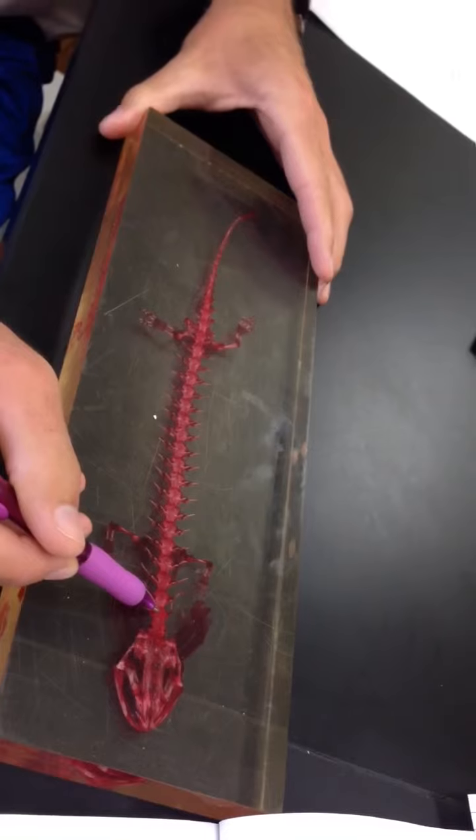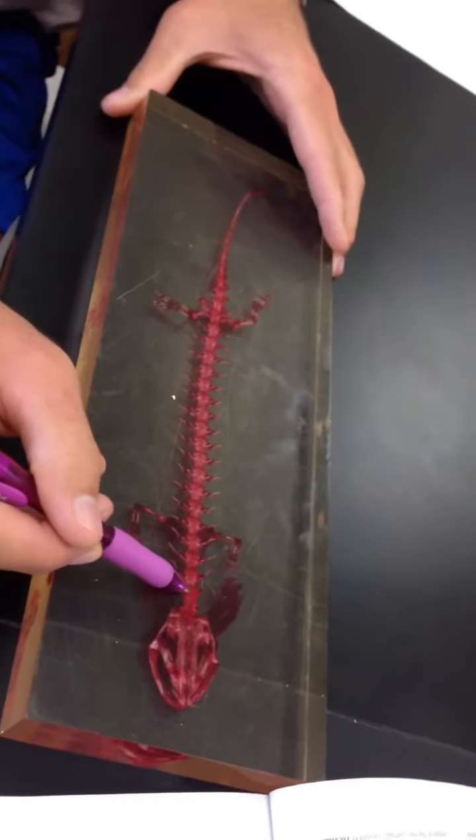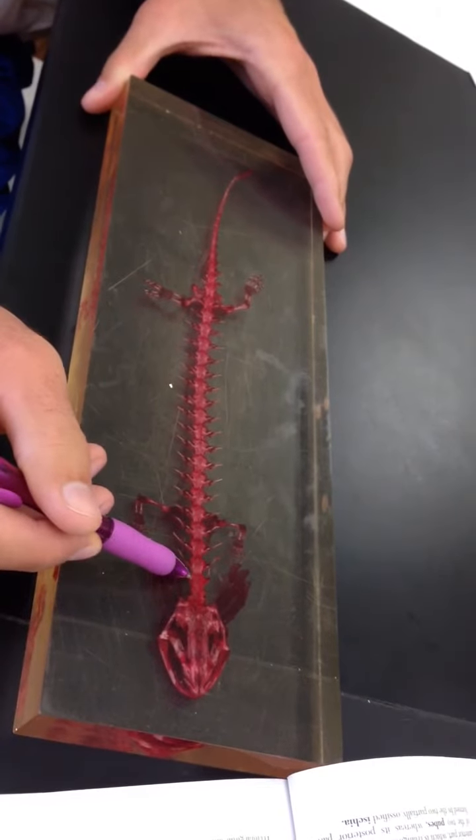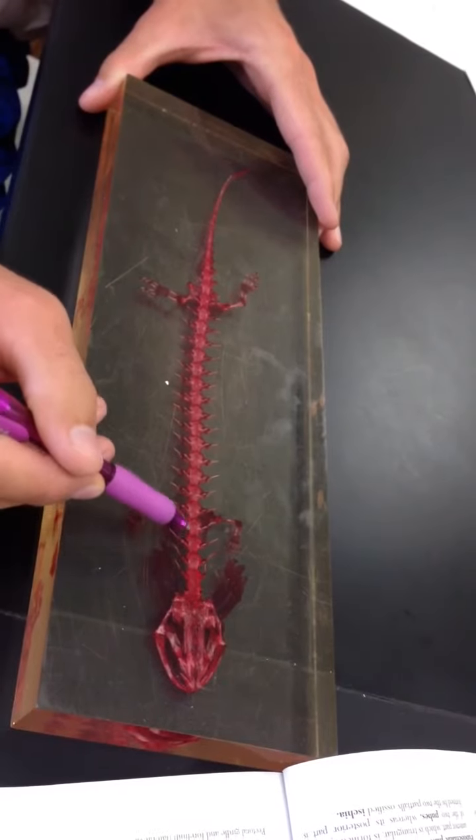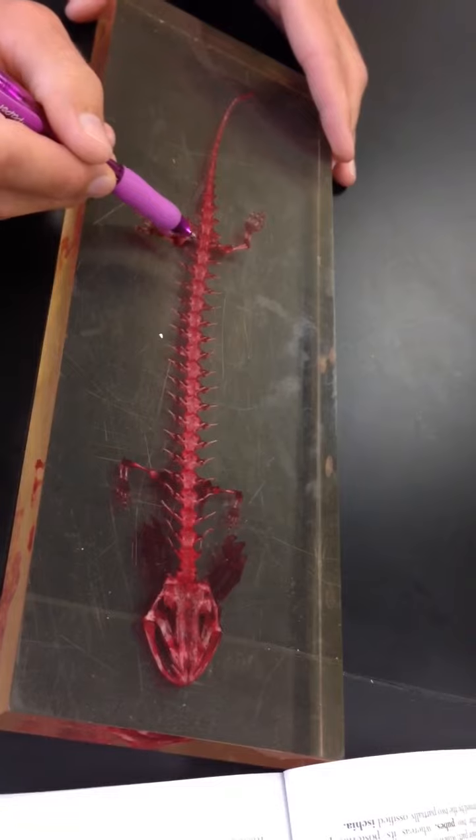Coming down to the vertebrae, we start out with one fused cervical vertebra, which is different from humans who have seven cervical vertebrae. And then the nectaris has 17 thoracolumbar vertebrae coming all the way down to the pelvic girdle.